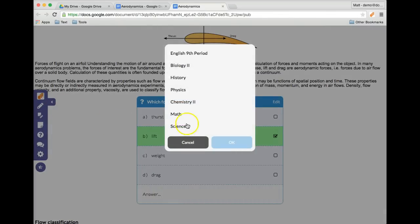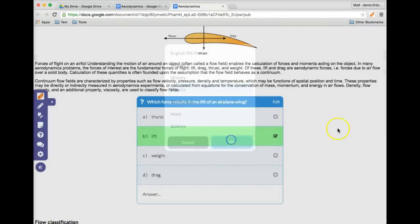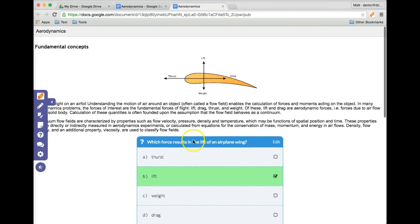And to assign it, just click on the extension right there, choose your class, and that's it. Now it's assigned. That's how you easily add multiple choice questions to your Google Docs with DocentEDU.